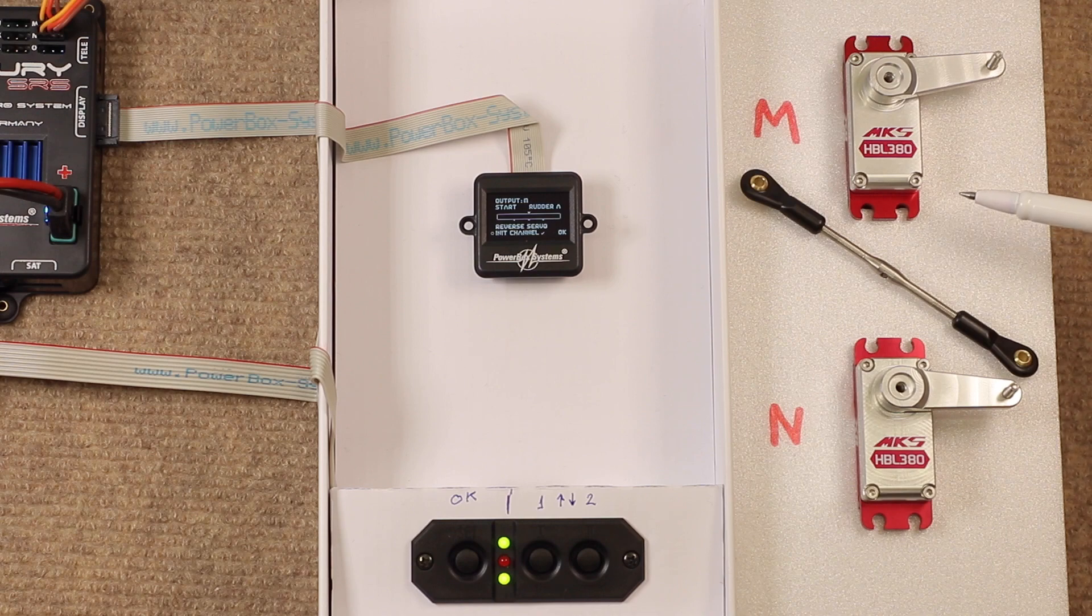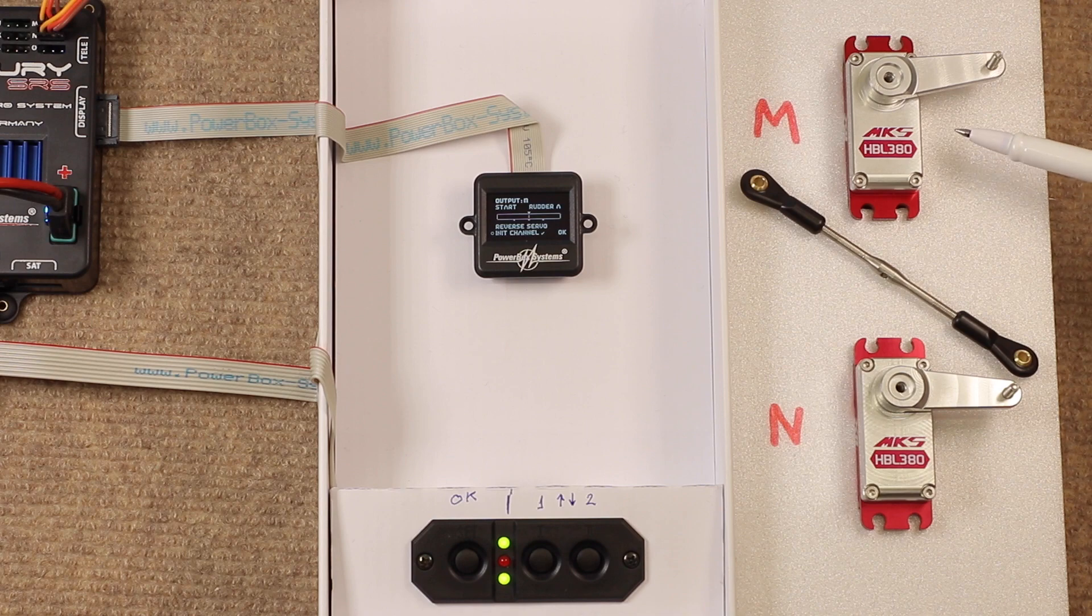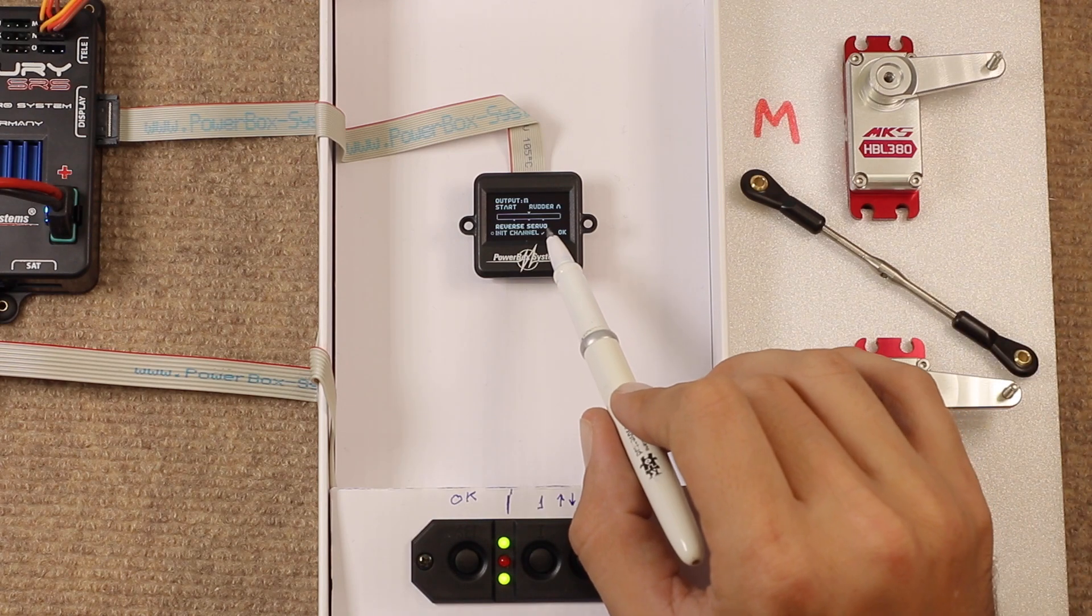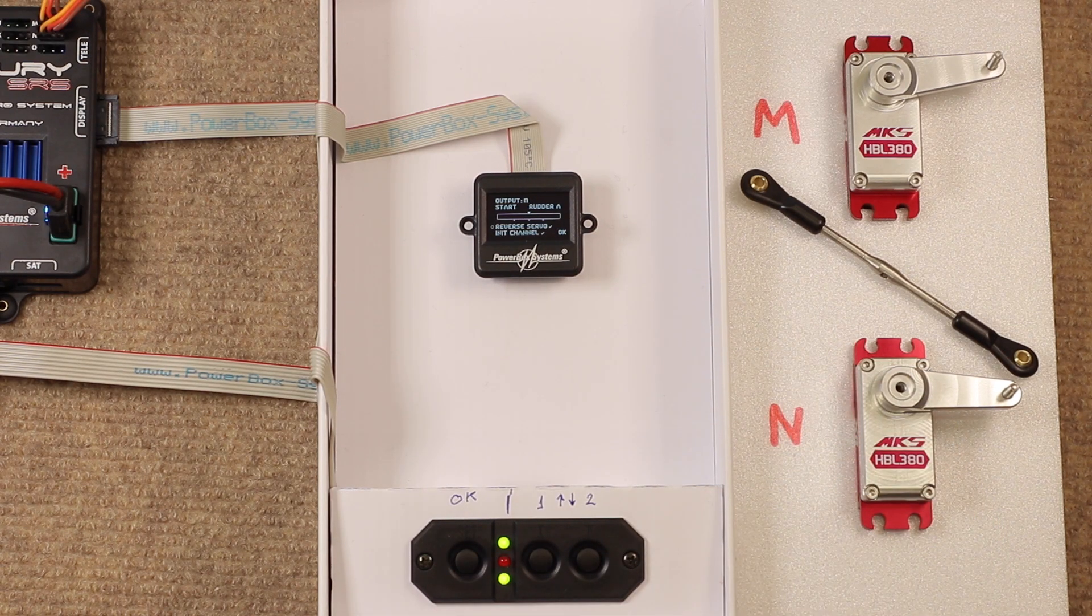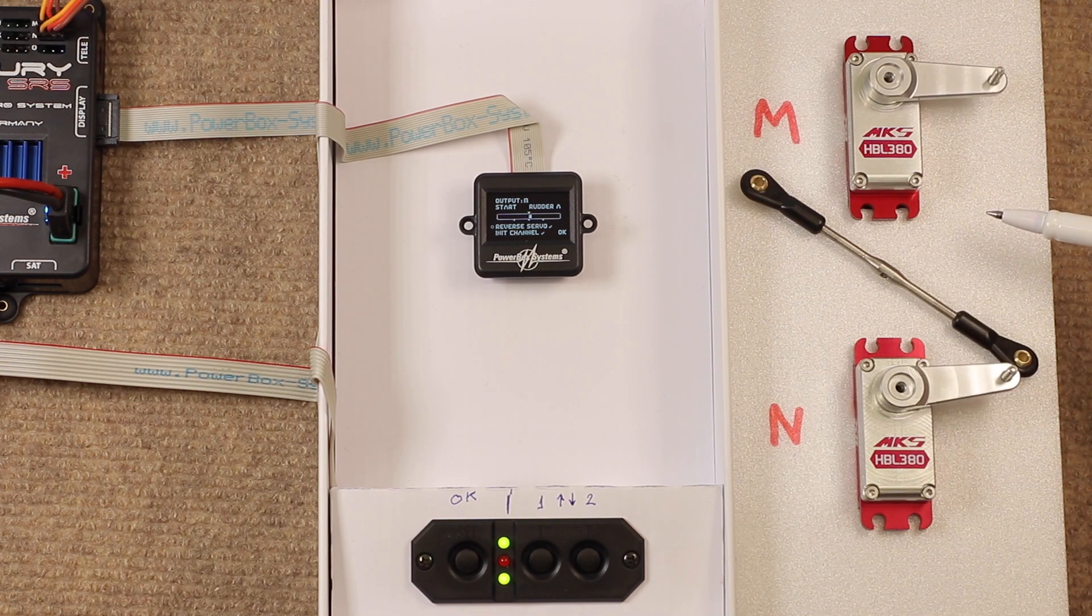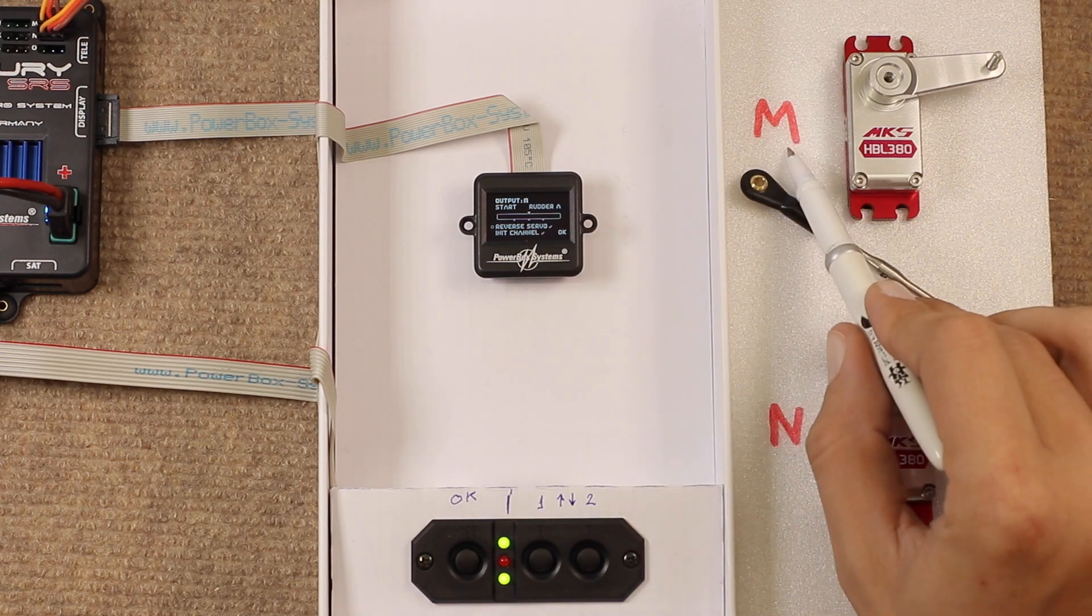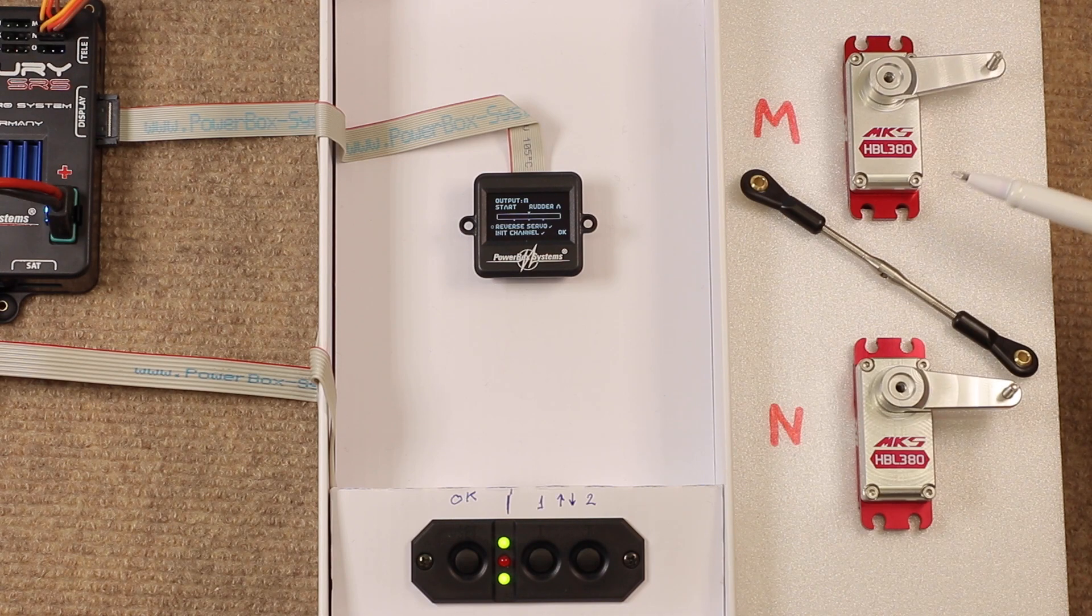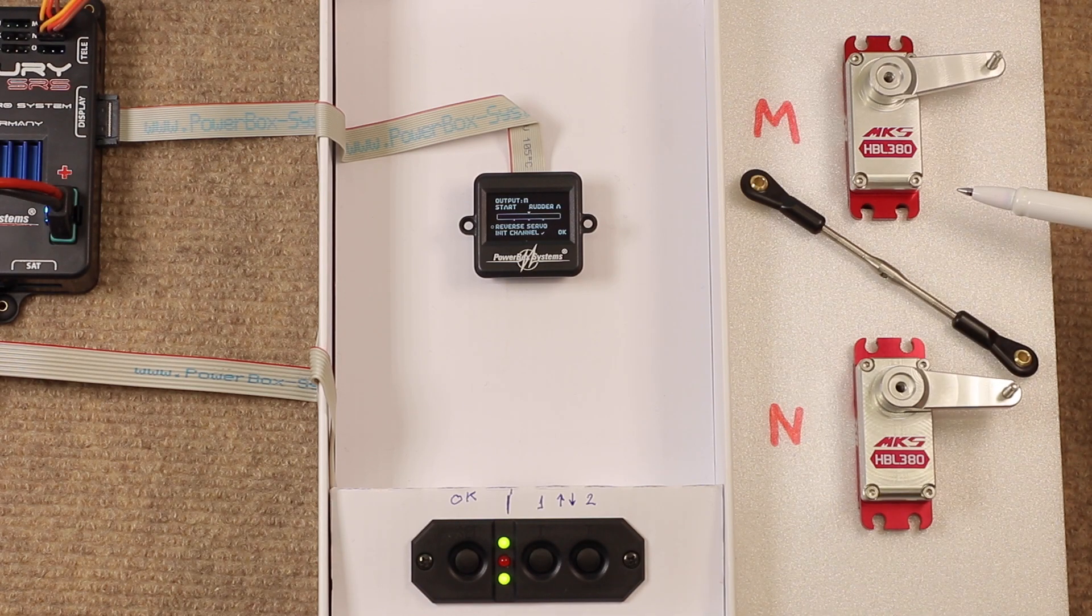Now, in this case, both servos are working in the same direction as we would want them to. However, sometimes we need to reverse one of the two channels. So we have a very easy option here, which is reverse servo. We simply select that. And now if we move our transmitter stick, as you can see, that's now reversed that particular servo. Servo on output M, which is this one. In my case, as that's now wrong, I'm going to reverse it back. And there we have working the right way around.